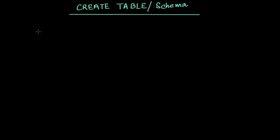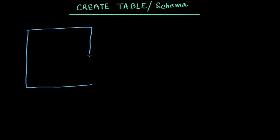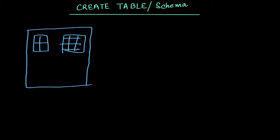Hello everyone, welcome to Tector.com. In this video, we will be learning how to create a table or schema. Table and schema are equivalent terms — we can use either. As we have already learned, these tables are inside a database, so if this is a database for a whole application, we will have multiple tables with certain relations among them. These tables can only be created if we have a database already created, which we did in our last lecture. In this lecture, we will be creating tables.